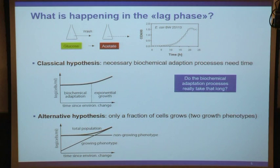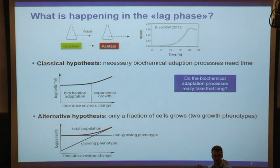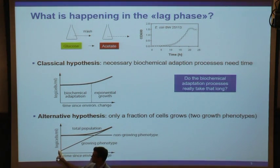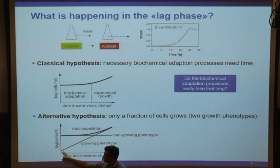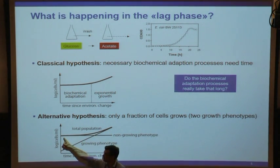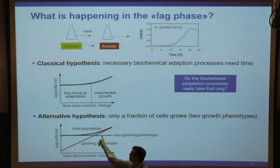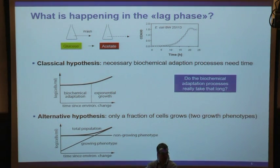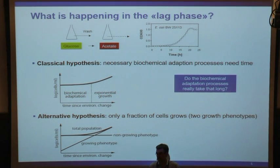The alternative explanation we came up with was that eventually only a fraction of cells would start to grow once put into the new environment. So we would have a growing population that increases in number exponentially, and a population that does not grow, staying constant in number. If we overlay these two curves, we would precisely get what we see on a population level as a lag phase.